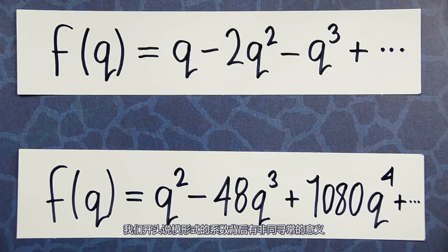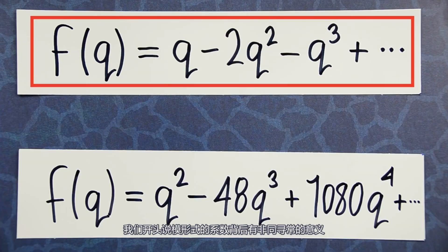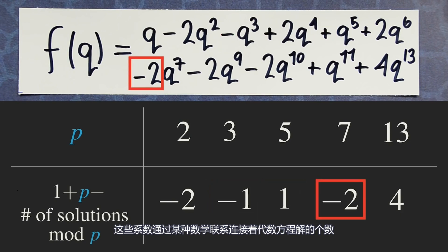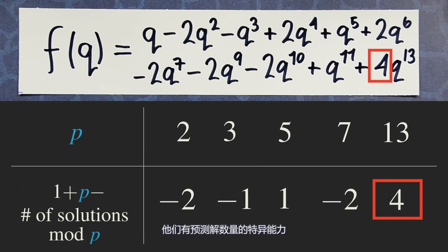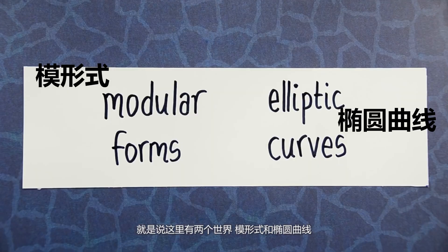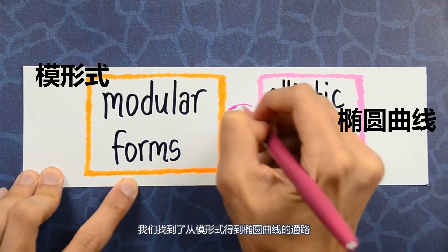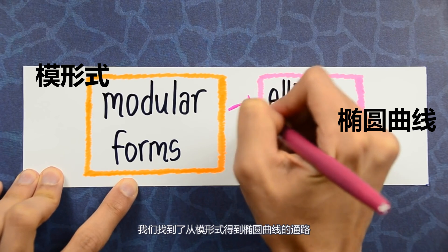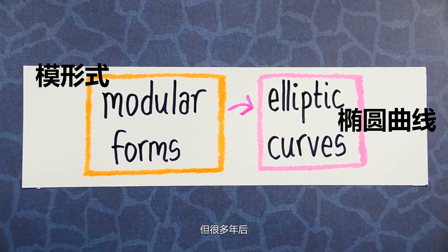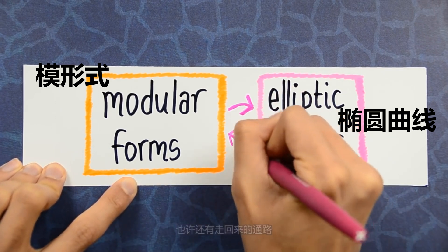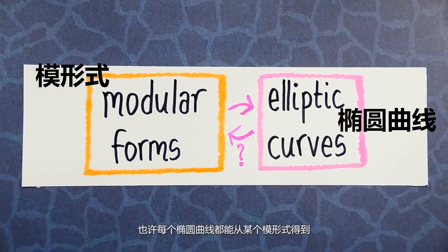We started off the video saying that the coefficients of a modular form have a hidden meaning — we can now see what this is. These coefficients somehow count the number of solutions to an algebraic equation living in an opposite corner of math. They have a strange predictive power. In other words, we have two worlds — modular forms and elliptic curves — and to a modular form we've attached an elliptic curve. But it wasn't until many years later that people dared to suggest you might be able to go back: that maybe every elliptic curve came from a modular form.